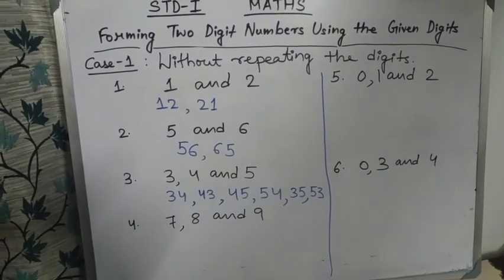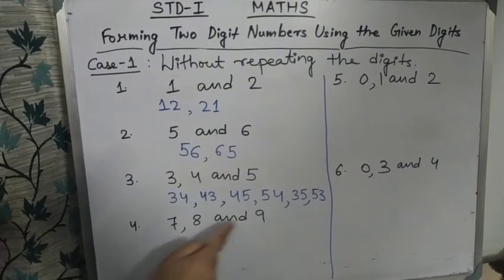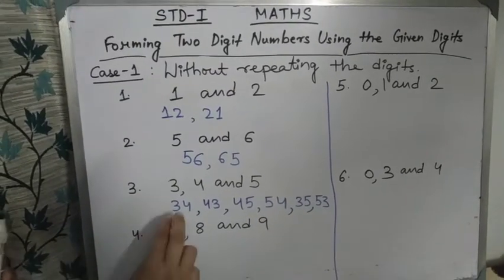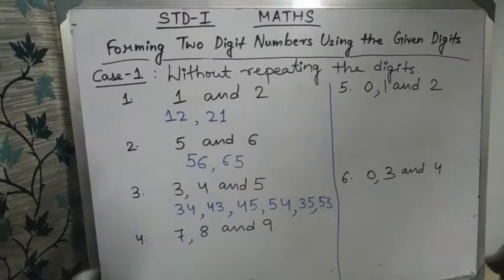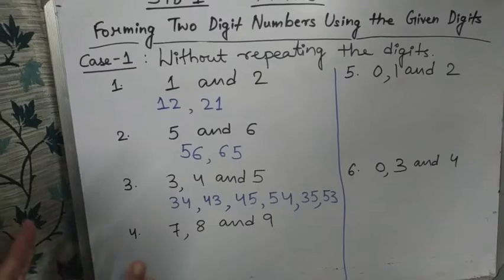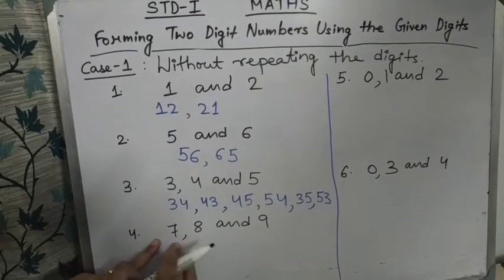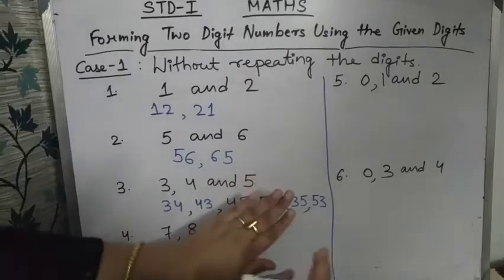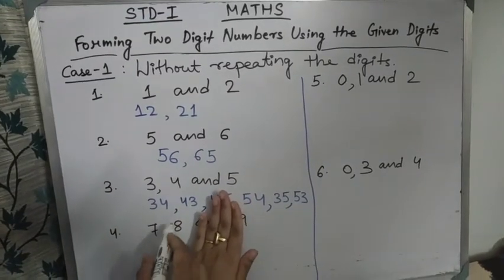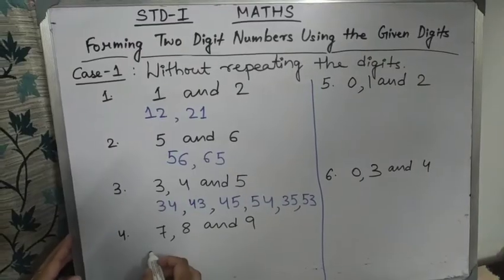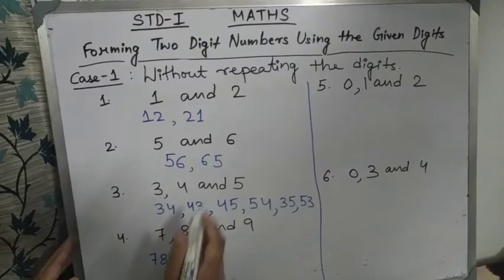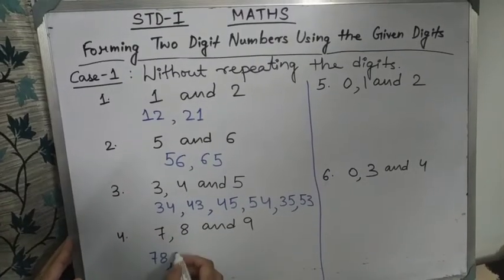Number 4 — three digits: 7, 8, and 9. We have to make two-digit numbers with these three digits. First, cover 9 and make numbers with 7 and 8: we get 78, then reverse — 87. Now cover 7: we get 8, 9 — that is 89, then reverse — 9, 8 — that is 98.